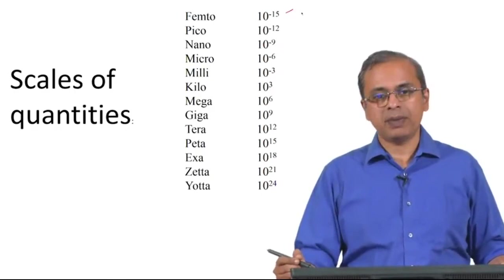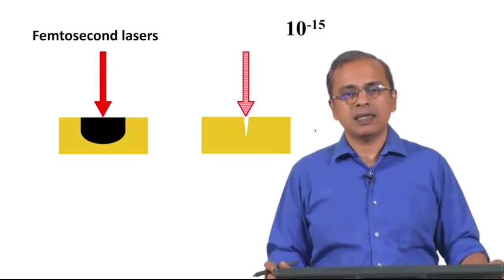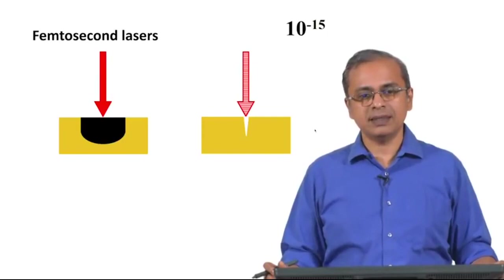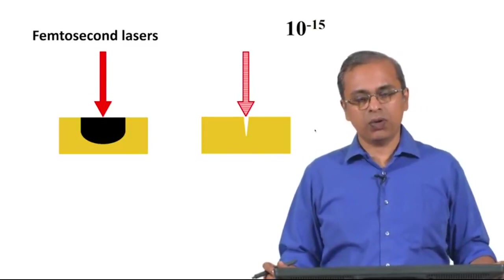For example, femto would refer to something that is in the 10 power minus 15 range. Certain specialized medical facilities have lasers referred to as femtosecond lasers. Femtosecond lasers are lasers which are on for 10 power minus 15th of a second and then they go off.